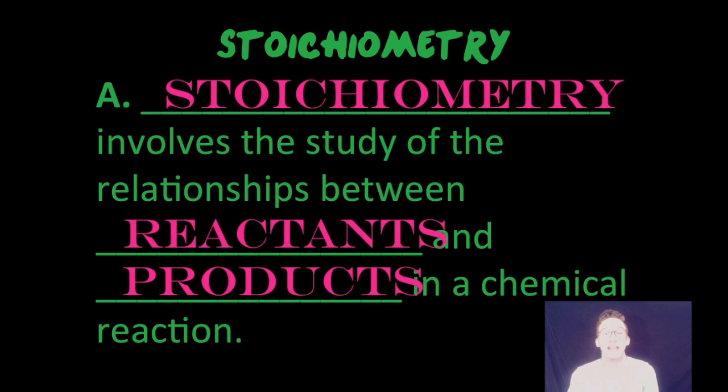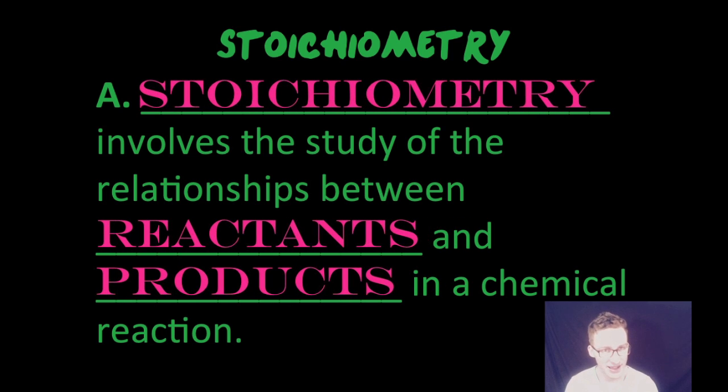So first things first, what the heck is stoichiometry? It's simply the study of the relationships between reactants and products in a chemical reaction. So how much of one thing do you have compared to how much of something else? Or if you start with a certain amount of reactants, how much product would you get? Or if you wanted a certain amount of product, how much reactant should you start with?